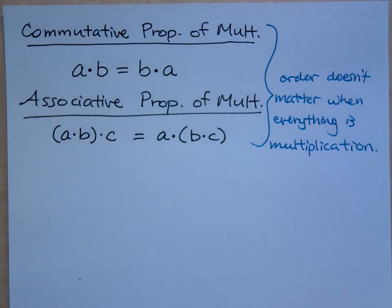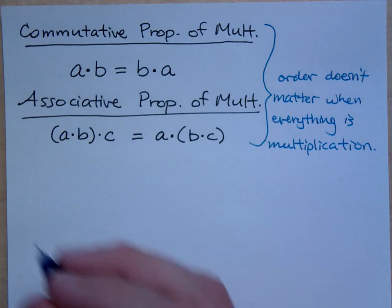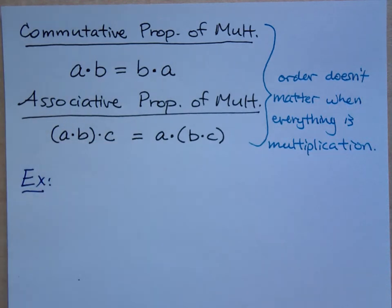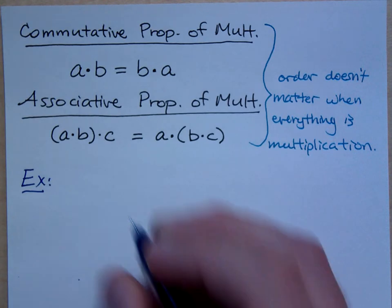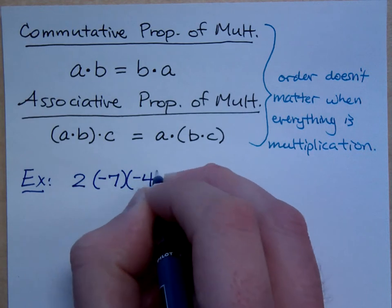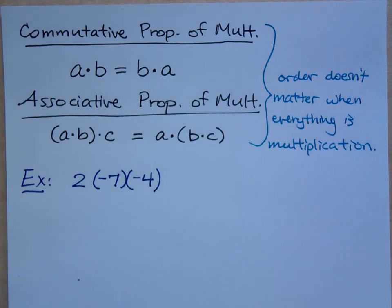Now I want us to go back and look at an example that we've already done. We did the example that was 2 times negative 7 times negative 4. You guys remember that? Now, we already know what the answer is because we've already done it. What I want you to see is that if you rearrange these factors, you still get the same answer.